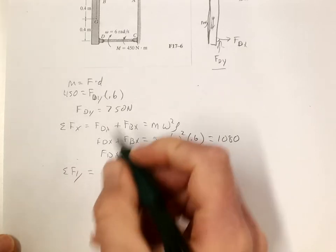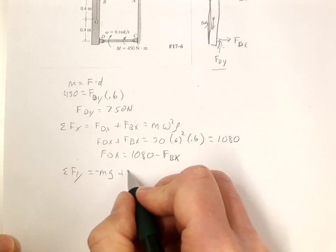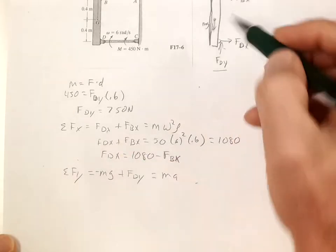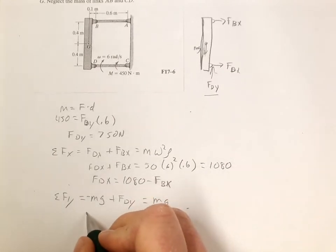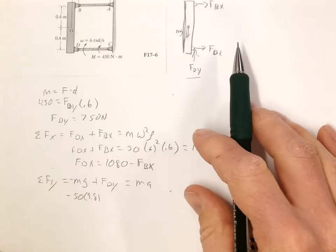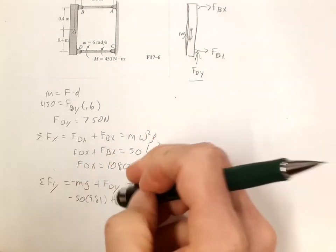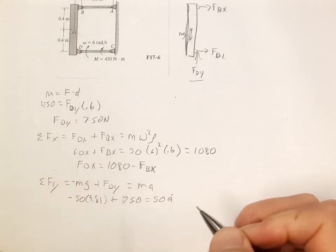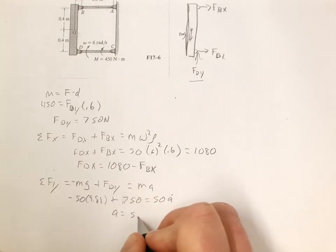In this case we have MG down and we've got FDY up, and that is equal to MA, the acceleration upward of the block. So MG is going to be negative 50 times 9.81, 50 kilograms for the block, plus FDY which is 750, equals MA, 50 times A. Solving for that, A is equal to 5.19.